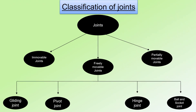Now, let's do a recap on the classification of joints. First we saw what joints are. Then we saw the three types: immovable joints, partially movable joints, and freely movable joints. Then we saw that these freely movable joints are split into gliding joints, pivot joints, hinge joints, and ball and socket joints.